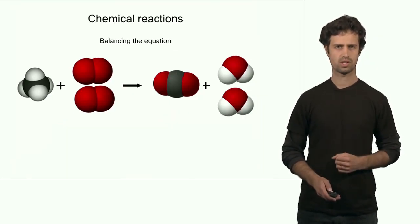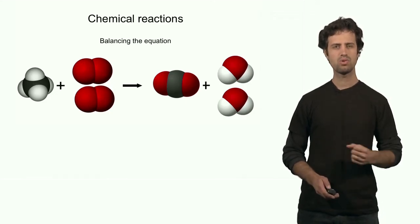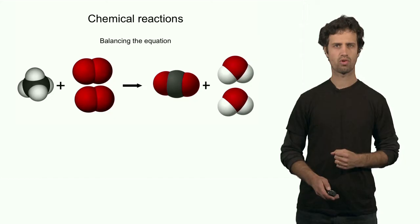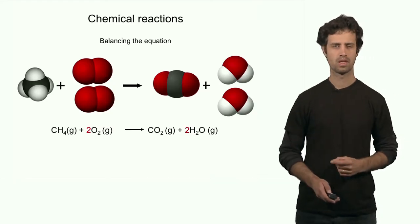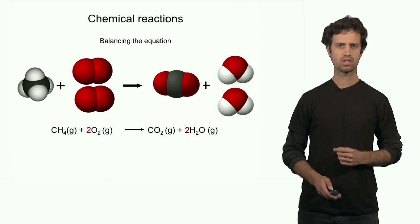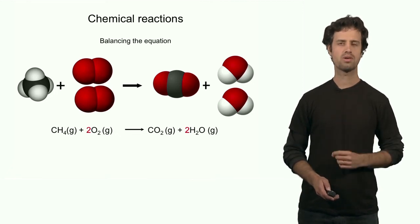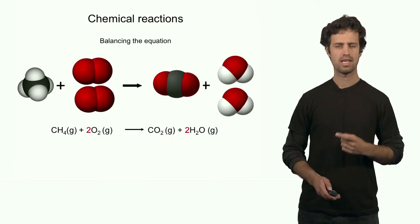Let's look at the following situation. Let's take the same methane molecule and let it react with 2 oxygen molecules to form 1 CO2 and 2 water molecules. This reaction can be written as follows. 1 methane molecule plus 2 oxygen molecules forming 1 CO2 and 2 water molecules. Is this reaction balanced?